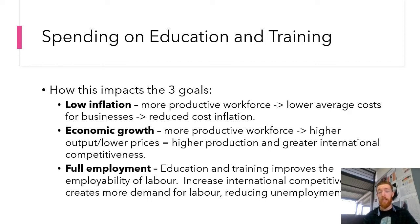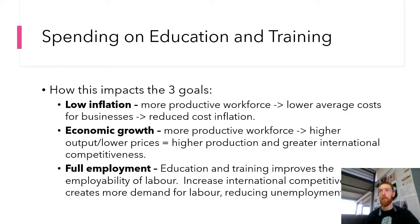For full employment, education and training improves the employability of labour, so people are more likely to get a job. This is happening a lot at the moment with unemployment caused by coronavirus — there are many government initiatives being put in place to skill people up in areas where they're needed. It also helps increase our international competitiveness and creates more demand for labour, which reduces unemployment as well. So education and training, if successful, helps achieve all three goals.